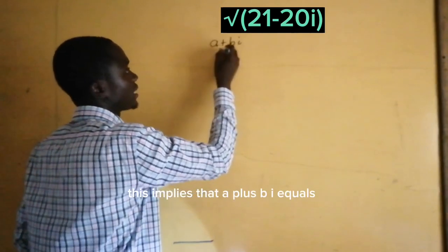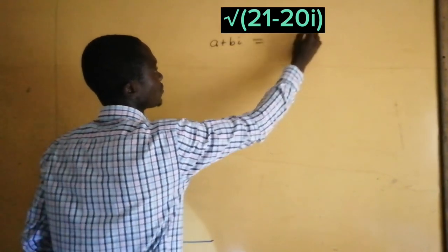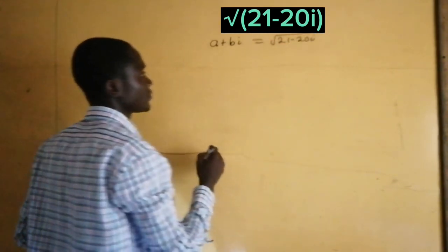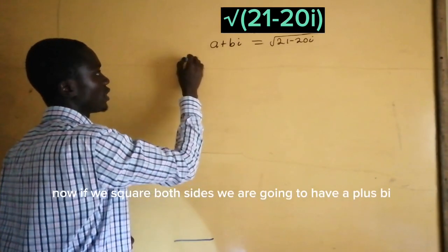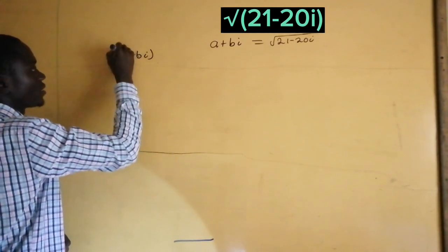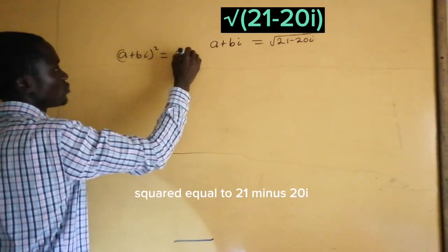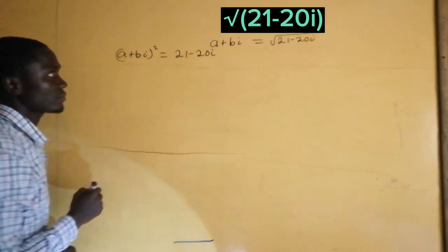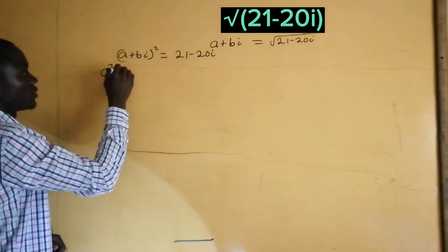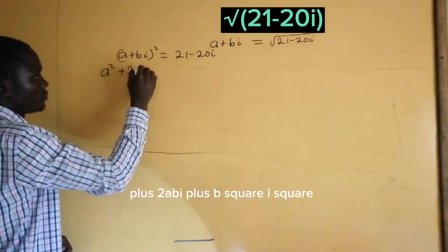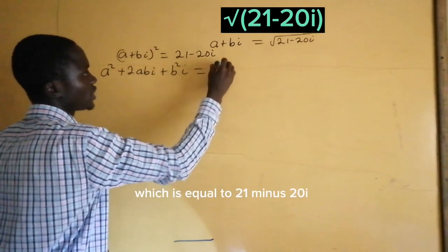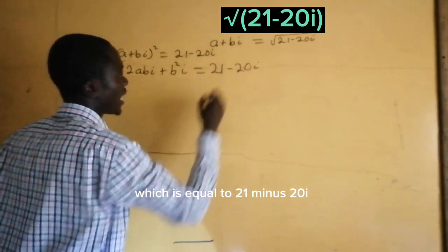This implies that a plus bi equals the square root of 21 minus 20i. Now if we square both sides, we are going to have a plus bi squared equal to 21 minus 20i. This gives a squared plus 2ab·i plus b squared·i squared, which is equal to 21 minus 20i.